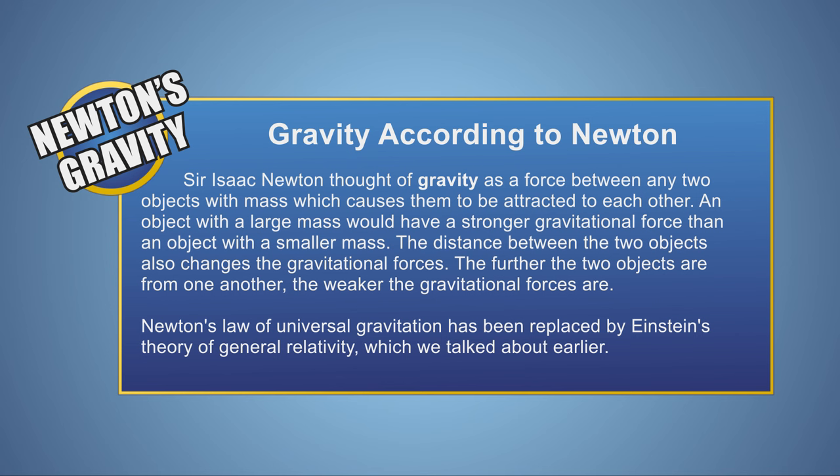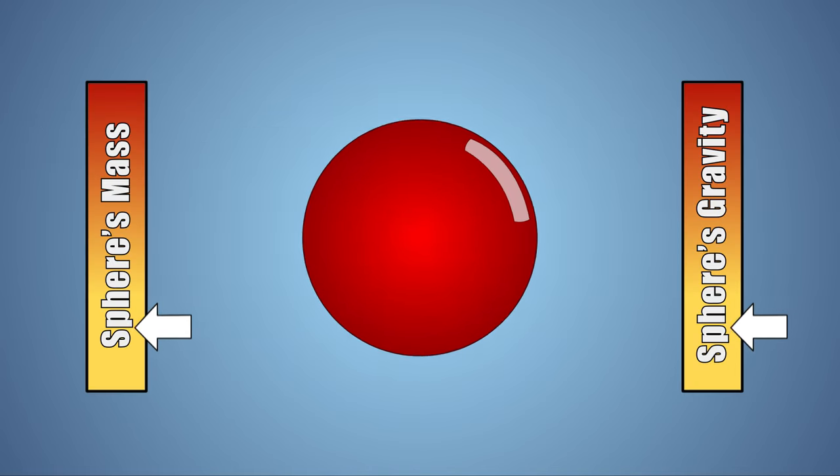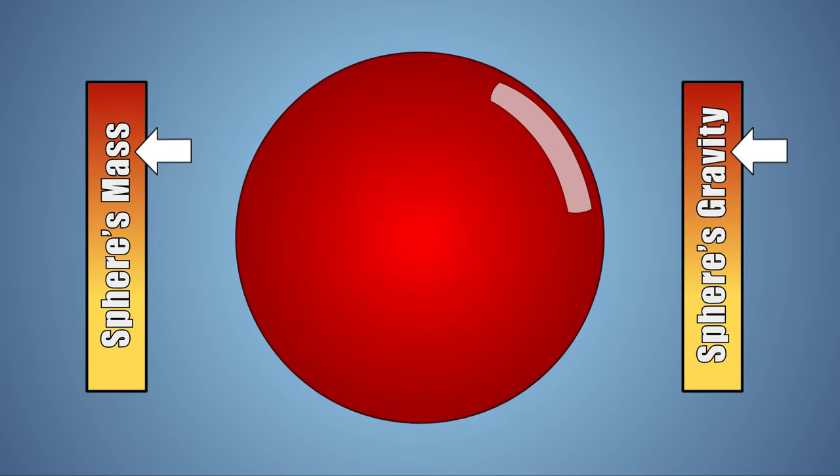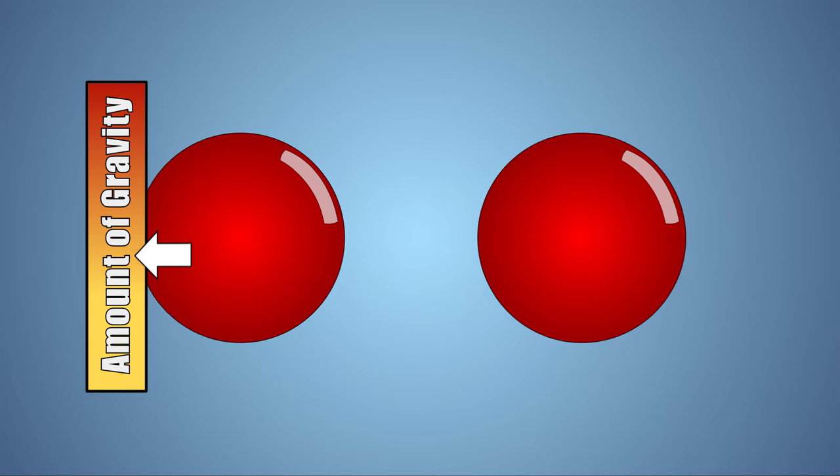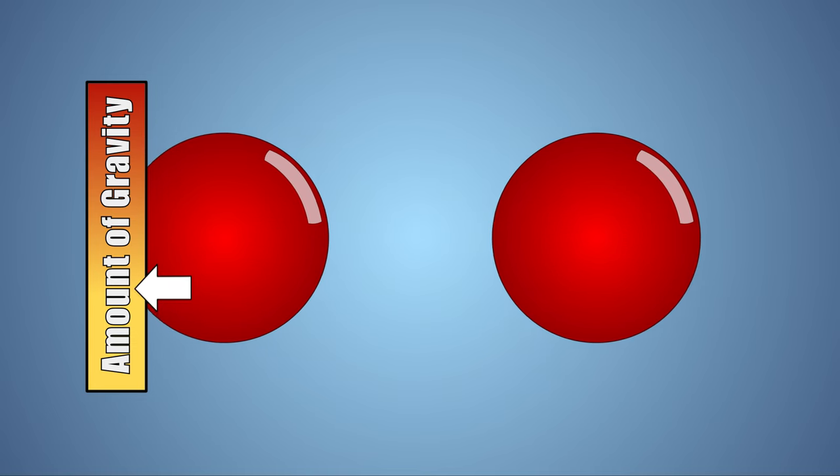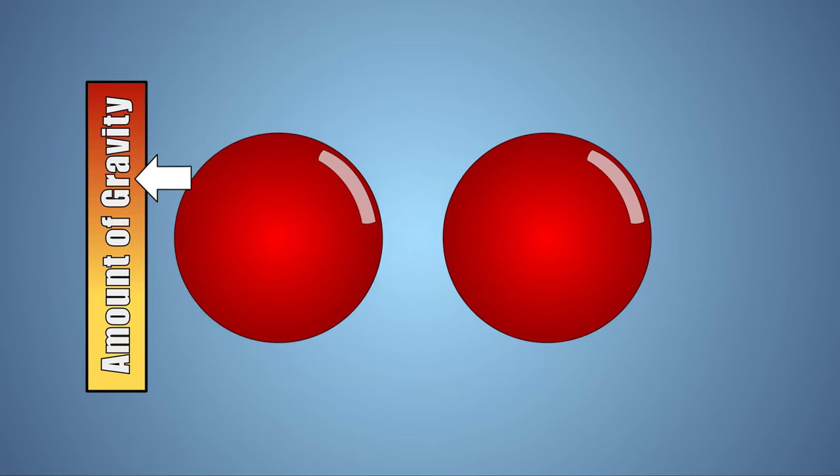This describes gravity as a force, where two objects with mass are drawn or attracted to one another, where the amount of attractive force is proportional to the mass of the object. Gravity between two objects decreases the further away the objects are from one another. Now that we have that over with.